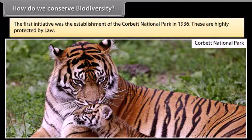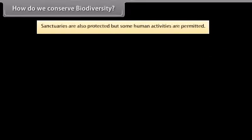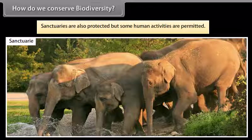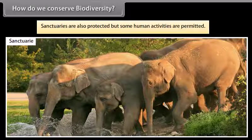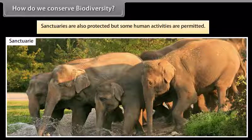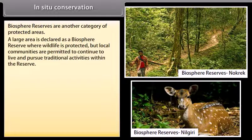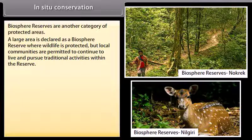The first initiative was the establishment of the Corbett National Park in 1936. National parks are highly protected by law; no human activity such as firewood collection and grazing is allowed. Sanctuaries are also protected, but some human activities are permitted. Biosphere reserves are another category of protected areas where a large area is declared as a biosphere reserve, wildlife is protected, but local communities are permitted to continue living and pursuing traditional activities within the reserve.